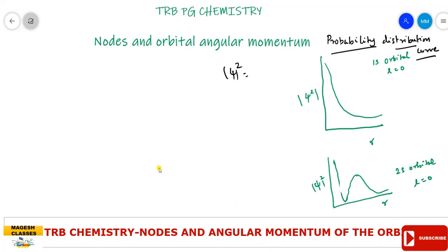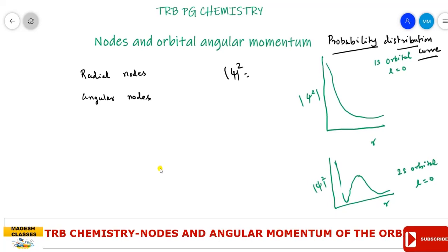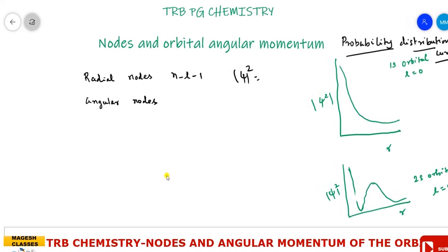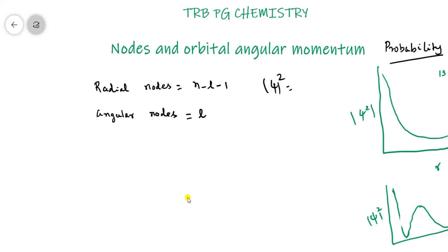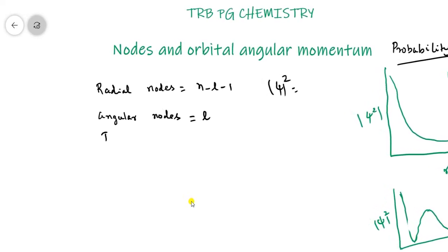In this similar way, we can classify two types of nodes: radial nodes and angular nodes, and also the total nodes. To find the radial nodes, there is a formula: n minus l minus 1. To find the angular nodes, it is equal to the azimuthal quantum number l. And the total nodes is equal to n minus 1.